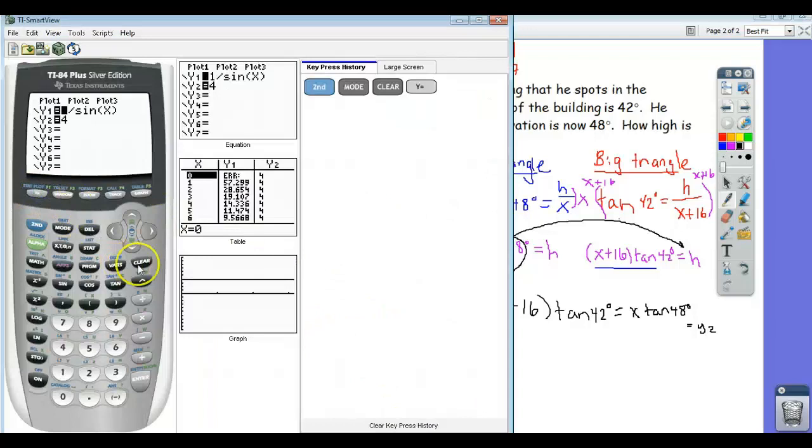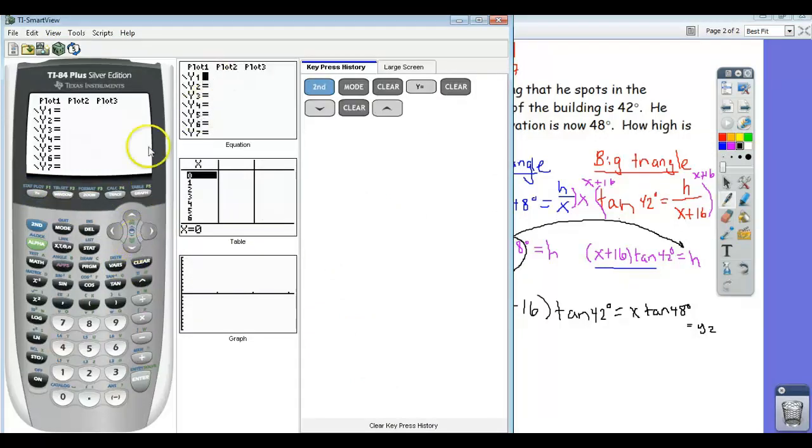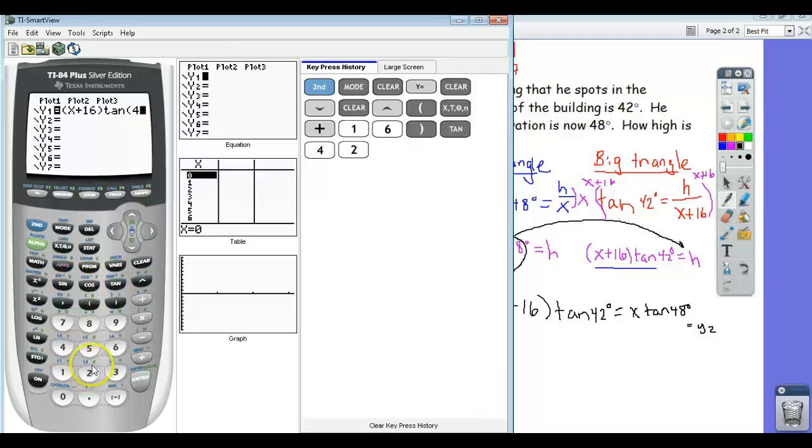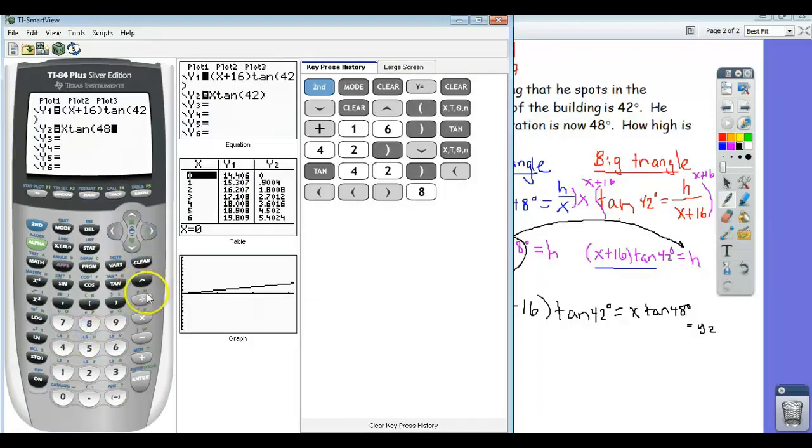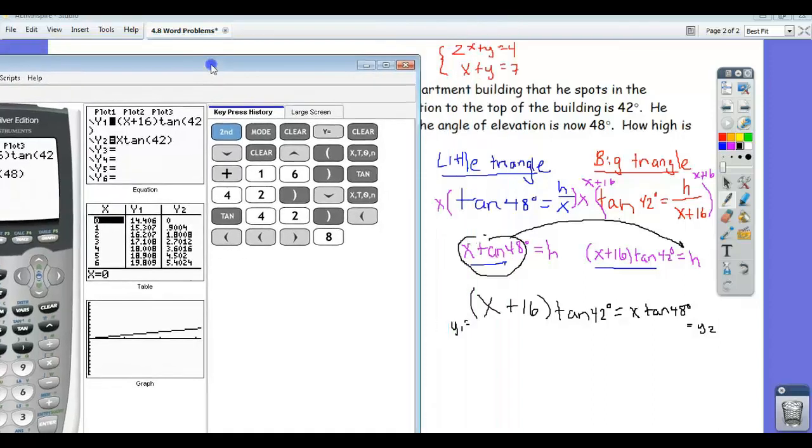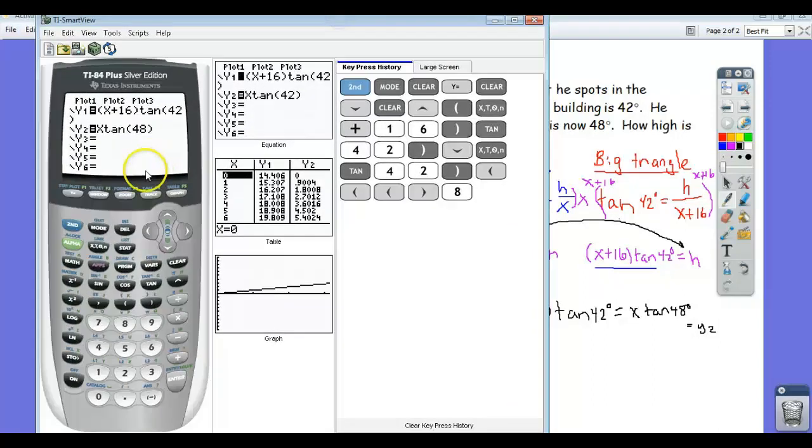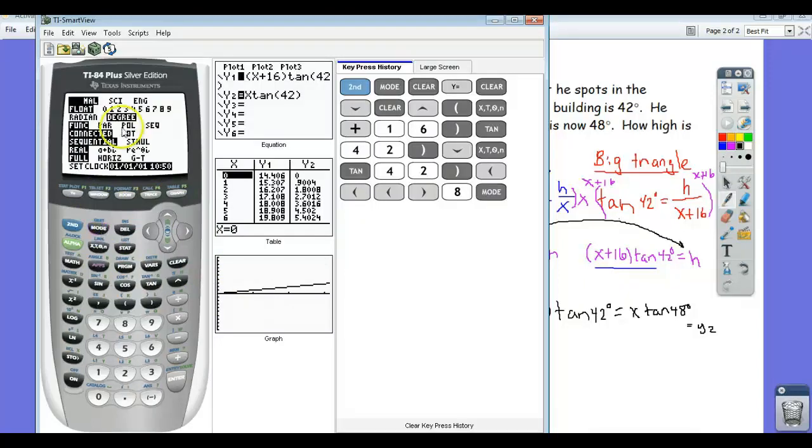So in y1, in my equation, I'm going to put x plus 16 times tangent of 42. And y2, I'm going to put in x times tangent of 48. The trade-off for doing it this way is you don't have to do any algebra. The unfortunate thing is you've got to kind of be good with the calculator and find out the appropriate window that will allow us to see where these intersect. I'm just going to make sure my mode is in degrees. It is, okay, because the problem's in degrees, so my mode needs to be in degrees.